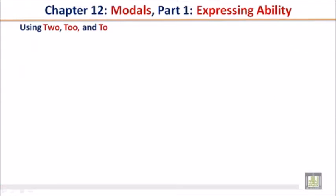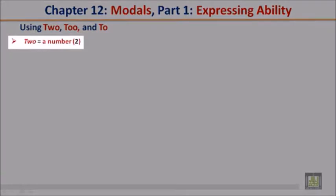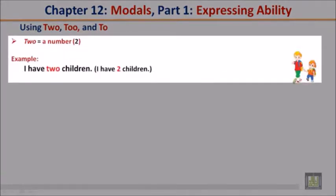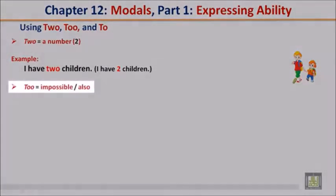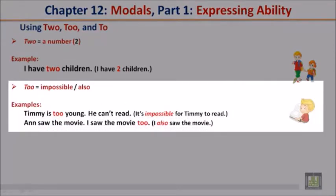Two equals a number: I have two children. Too equals impossible or also: Timmy is too young, he can't read — in this example, 'too' means impossible; it's impossible for Timmy to read. And: I saw the movie too — in this example, 'too' means also; I also saw the movie.